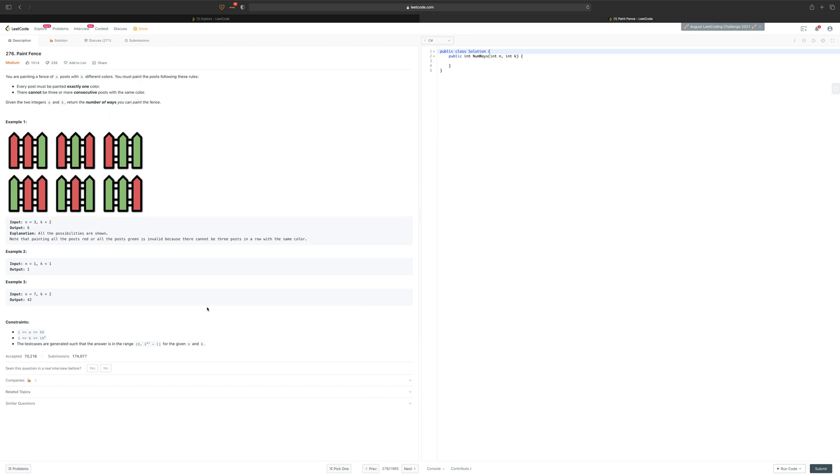If you look at the first case or the example that they have given where N or the number of posts is equals to three and the colors are two, we can have six different combinations and they have also given what all combinations we can make out of it.